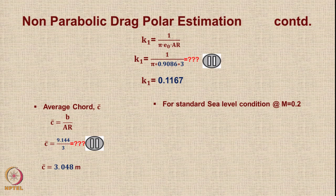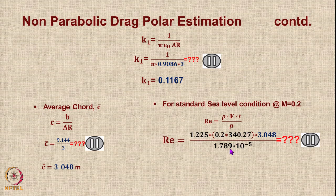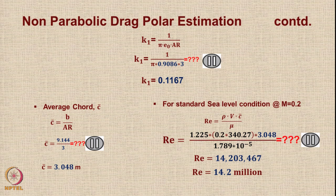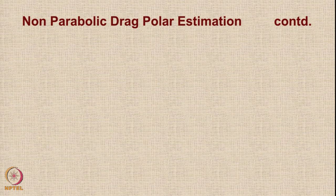For standard sea level conditions at M = 0.2, the Reynolds number is Re = ρ·V·c̄/μ, where V = 0.2 times the speed of sound and c̄ is the mean chord. This number comes out to be 14,203,467 or approximately 14.2 million. So the Reynolds number at Mach 0.2 at sea level is 14.2 million.